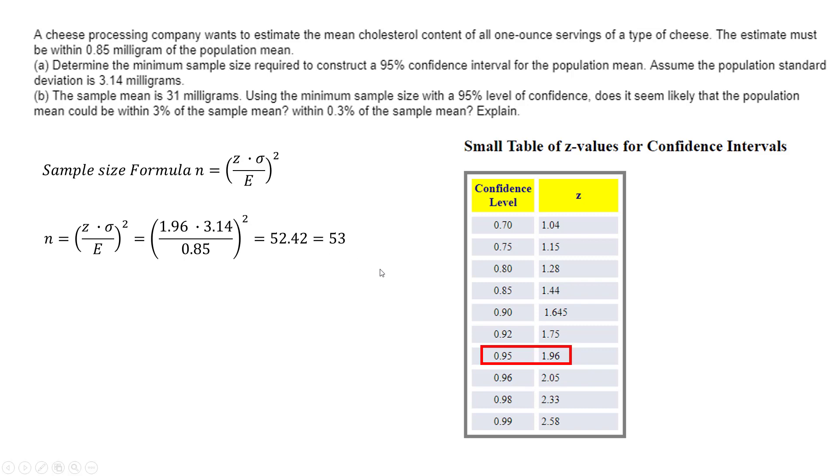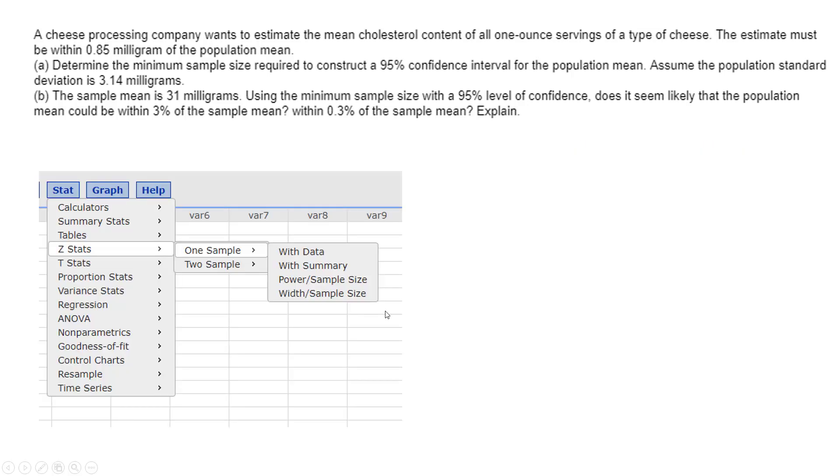There is actually a way to do this in StatCrunch. So in StatCrunch, if you go to Z Stats, again because I know the population standard deviation, one sample, this is just one sample, and then I want to go to Power Sample Size.